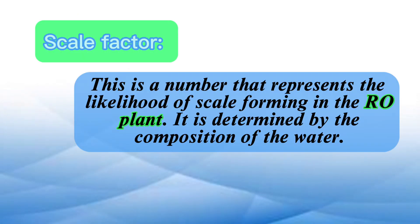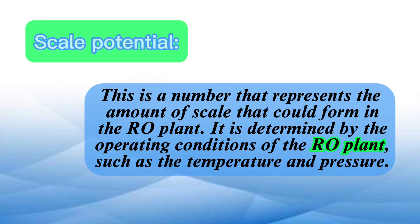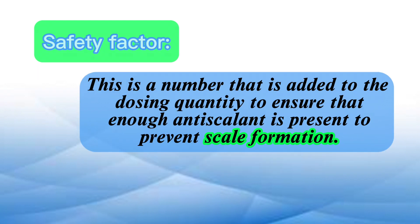Scale factor: this is a number that represents the likelihood of scale forming in the RO plant. It is determined by the composition of the water. Scale potential: this is a number that represents the amount of scale that could form in the RO plant. It is determined by the operating conditions of the RO plant, such as the temperature and pressure. Safety factor: this is a number that is added to the dosing quantity to ensure that enough antiscalant is present to prevent scale formation.